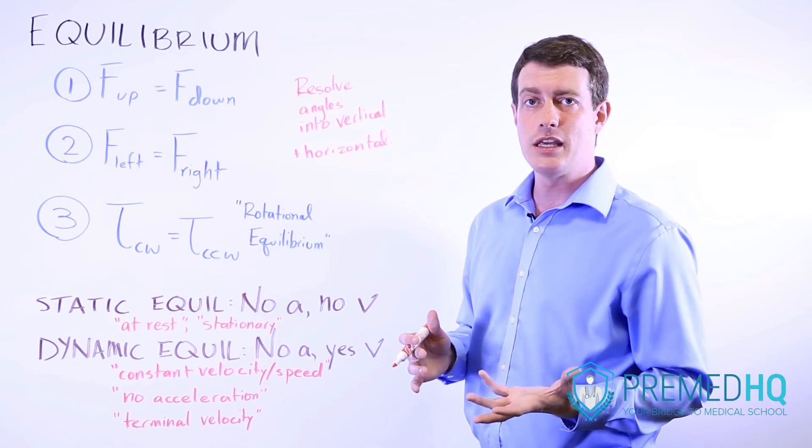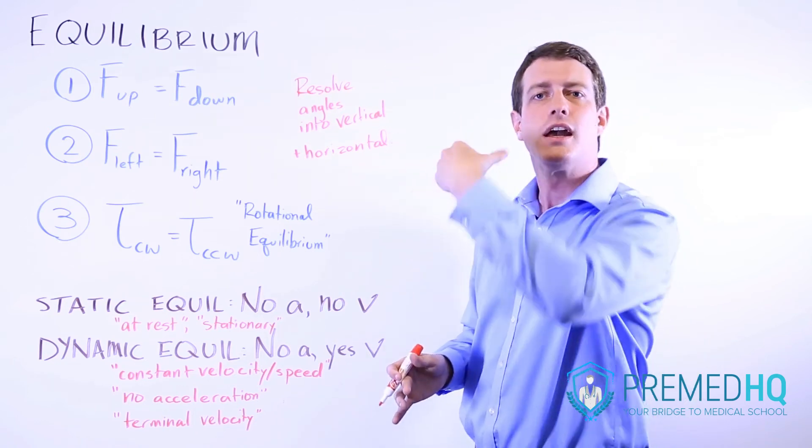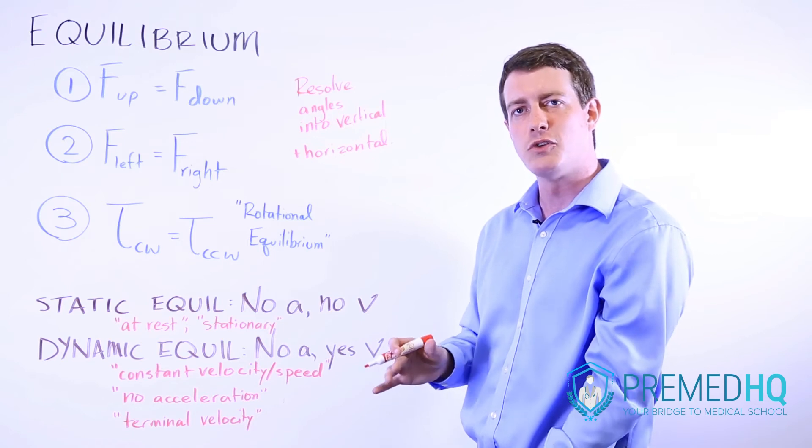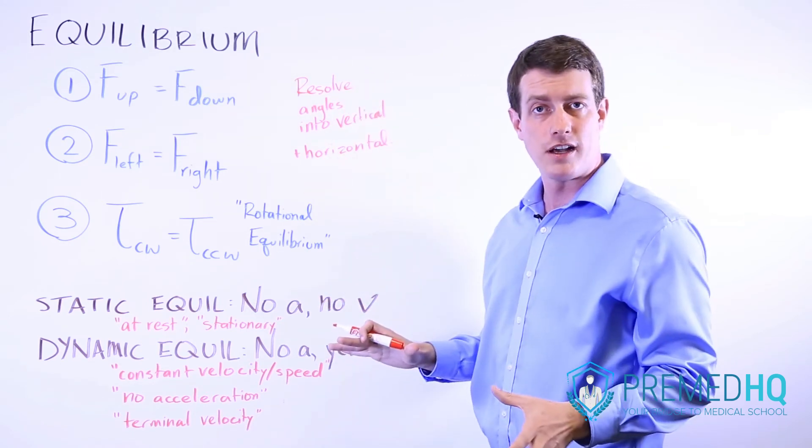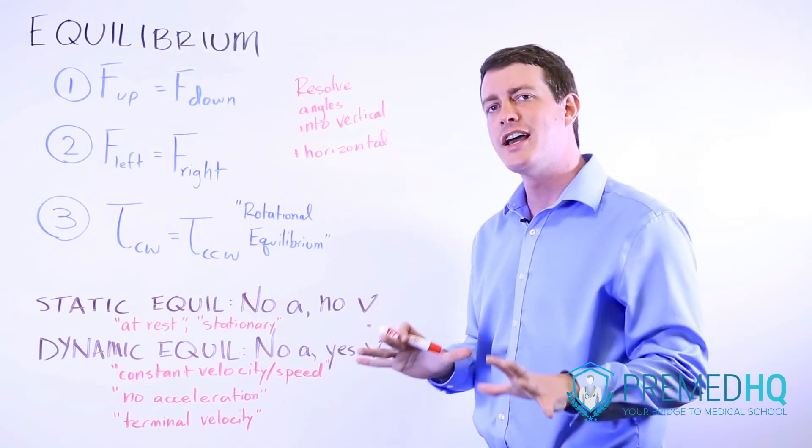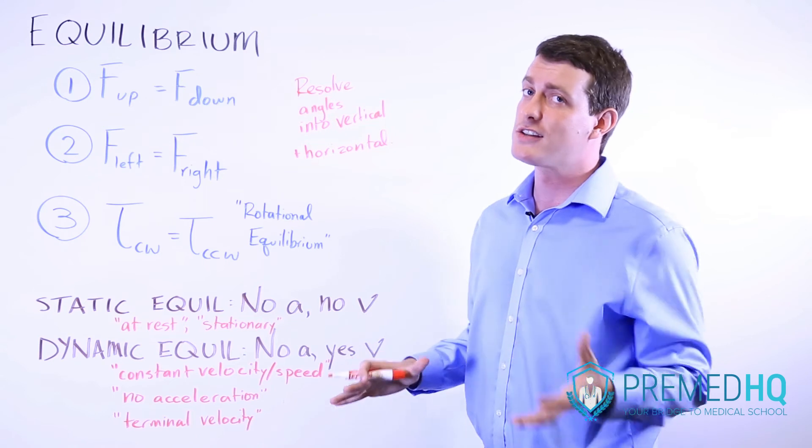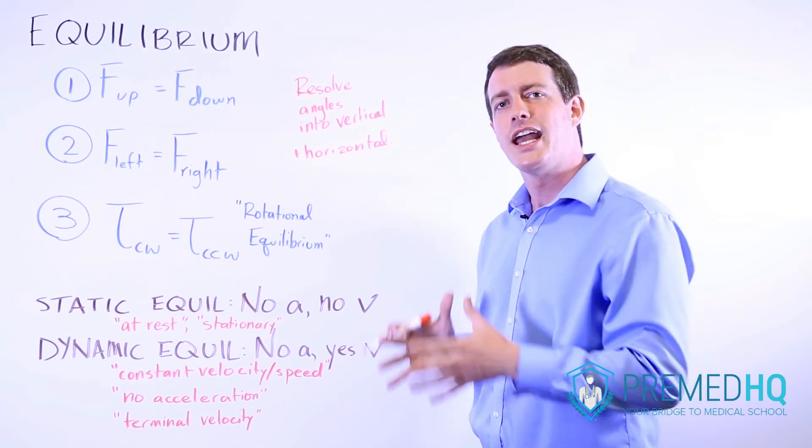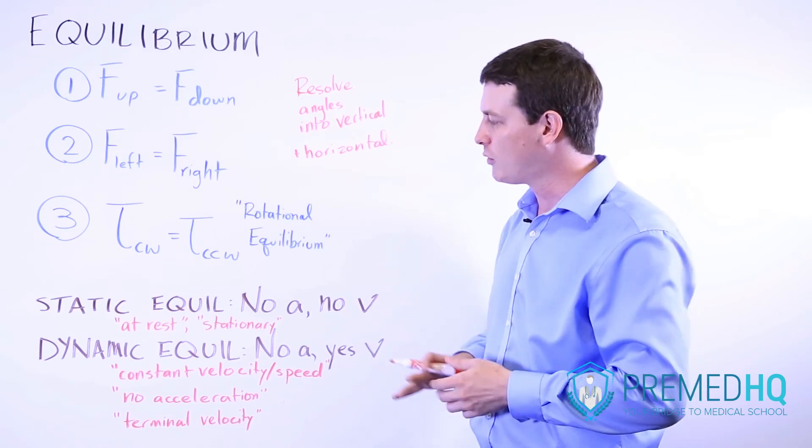Another example of a dynamic equilibrium might be an elevator that is being pulled upward by a tension force and pulled downward by a gravitational force so that it continues to rise, but at a constant velocity. Because there is no net force, there is no acceleration. But if it had velocity to begin with, that means that it can be moving yet not accelerating. That is the definition of dynamic equilibrium.